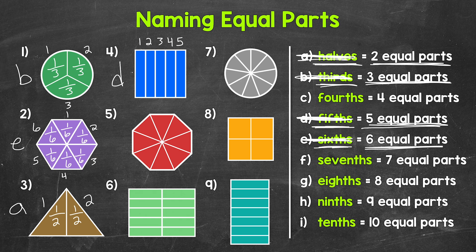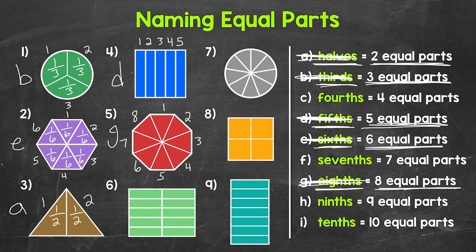Moving on to number five. This whole has been divided into one, two, three, four, five, six, seven, eight equal parts. We call eight equal parts eighths. So let's put a G next to number five and cross off eighths. Each one of those equal parts is one eighth of the whole.